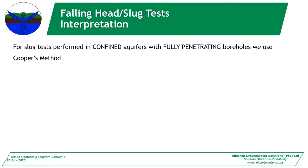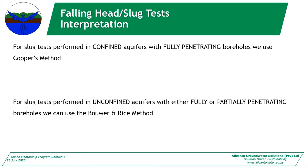For slug test interpretation, I'll go through the two main methods we use. For slug tests in a confined aquifer where the borehole is fully penetrating the aquifer, we use the Cooper method (Cooper et al.). For slug tests in unconfined aquifers with a fully or partially penetrating borehole, we use the Bower-Rice method — the one I learned at university at Free State.